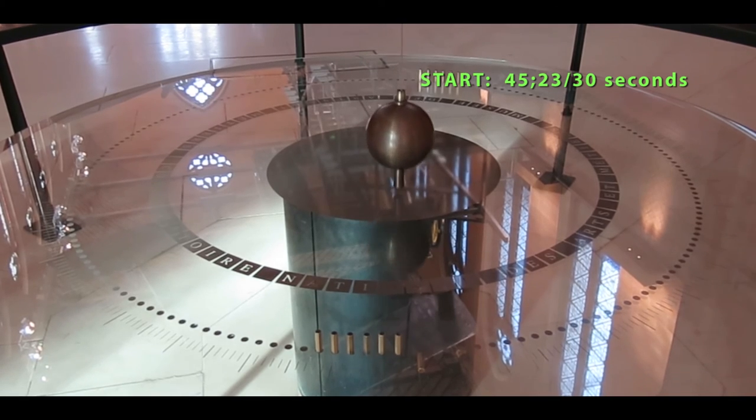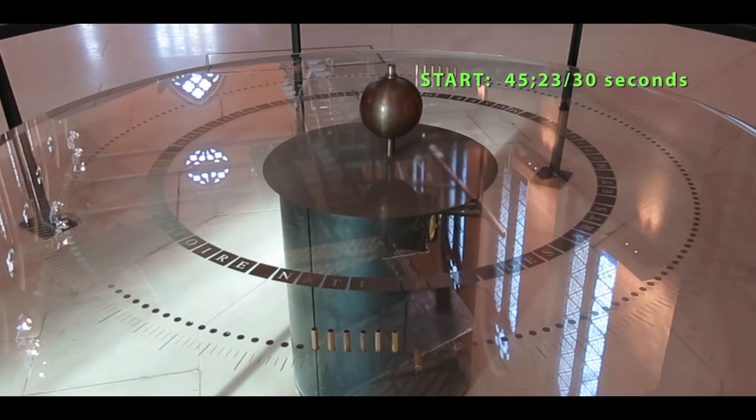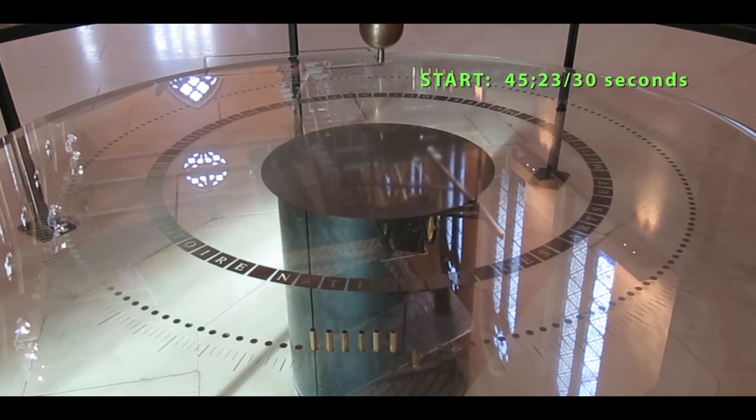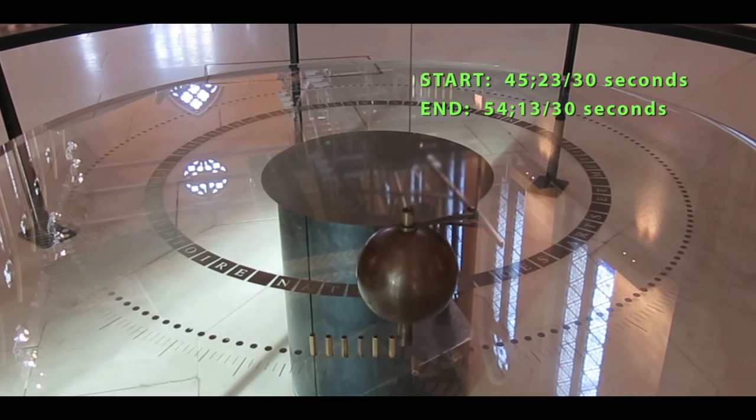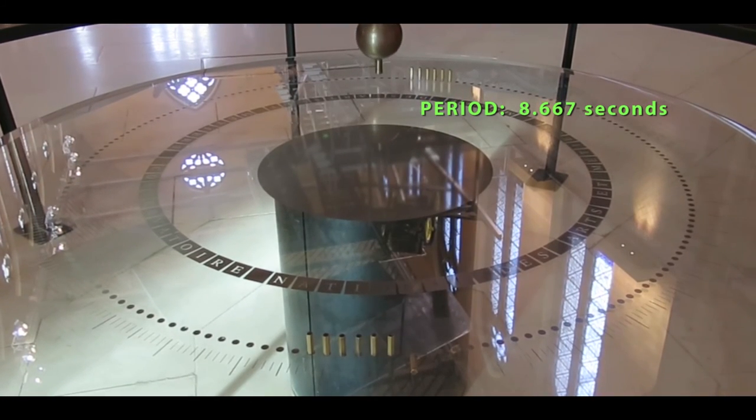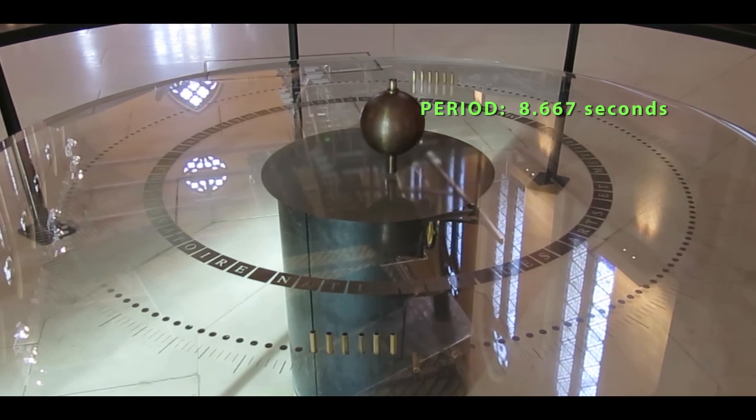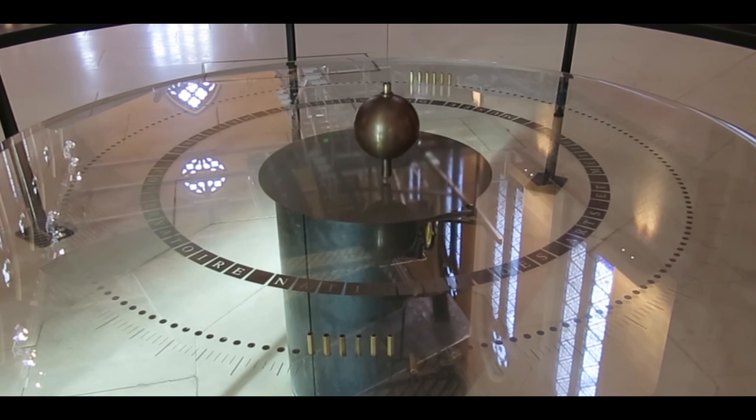So what we're seeing is Foucault's pendulum in the Museum Arts et Metiers. And here we're measuring the period. That's a start. So 45.23 over 30 seconds. And that's the end of a period. 54 seconds, 13. This is using my video frames that I'm able to calculate. So the period of this is around 8.7 seconds. And we're going to use that in a moment when we try to estimate the length of the pendulum.